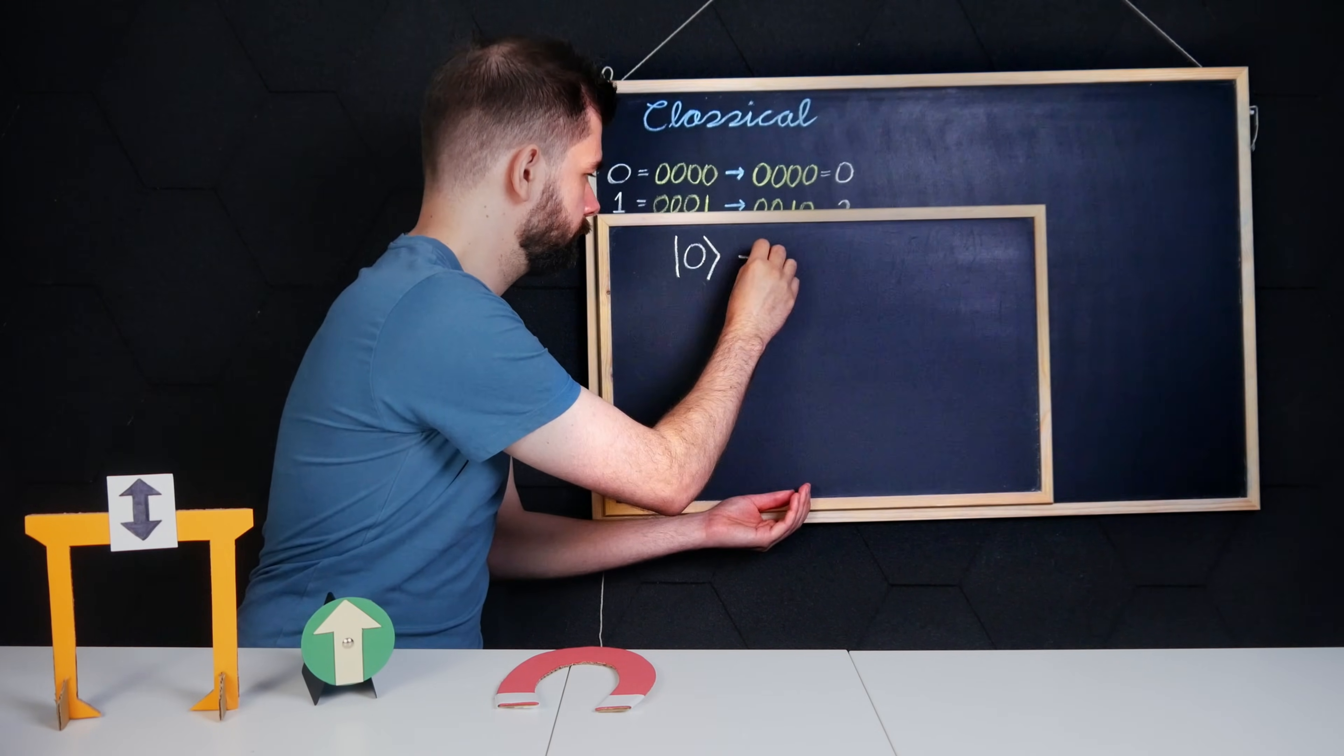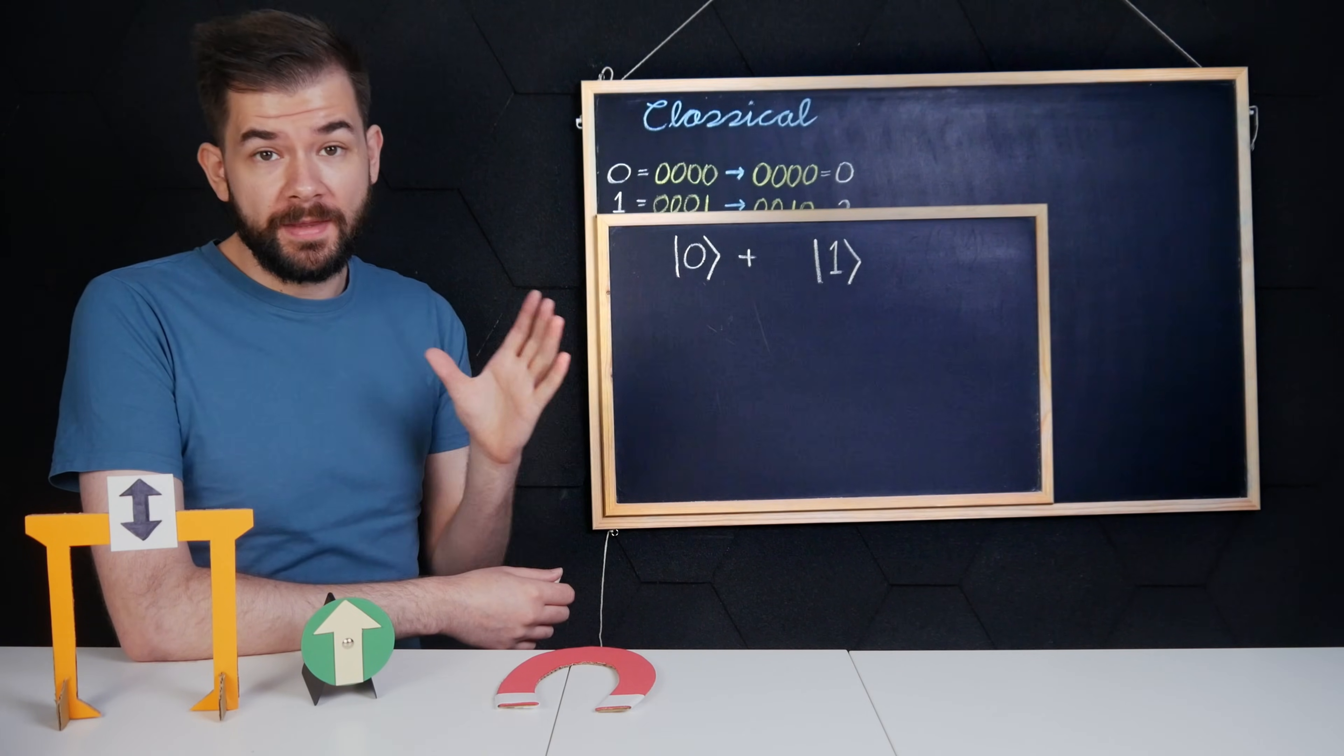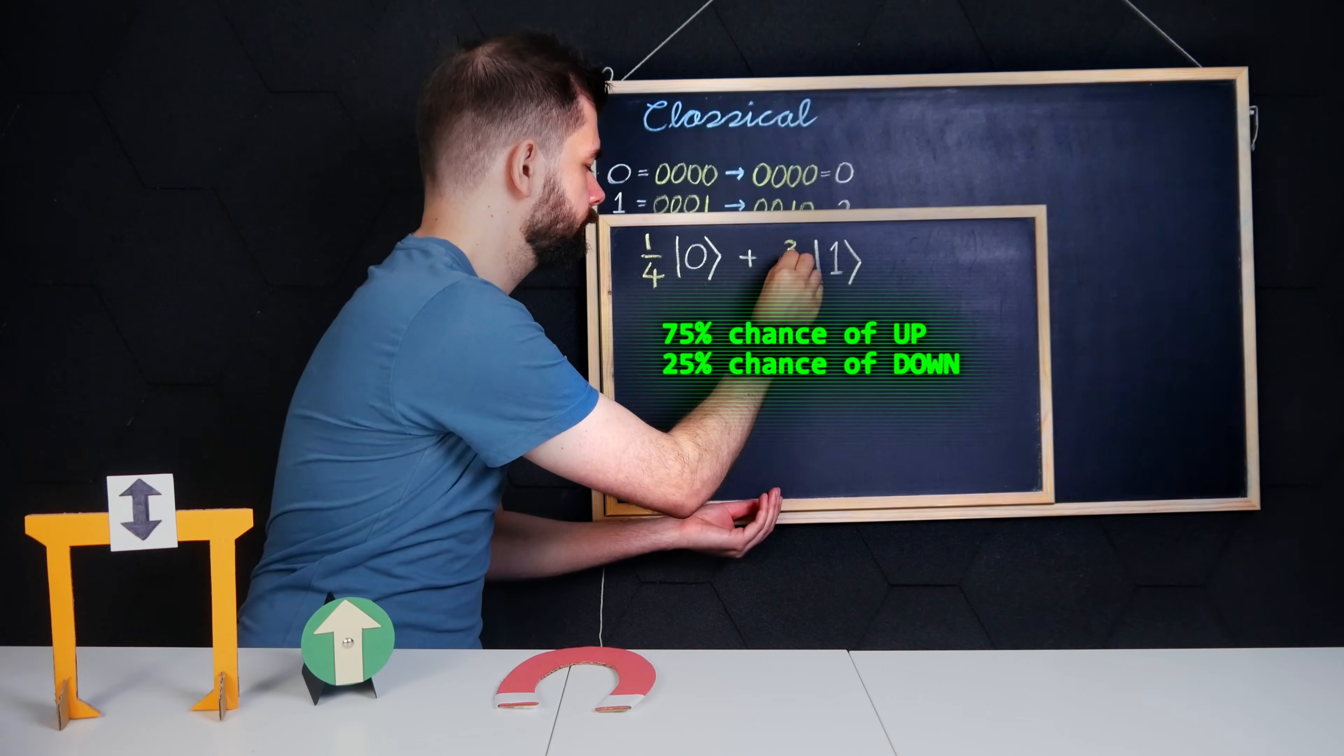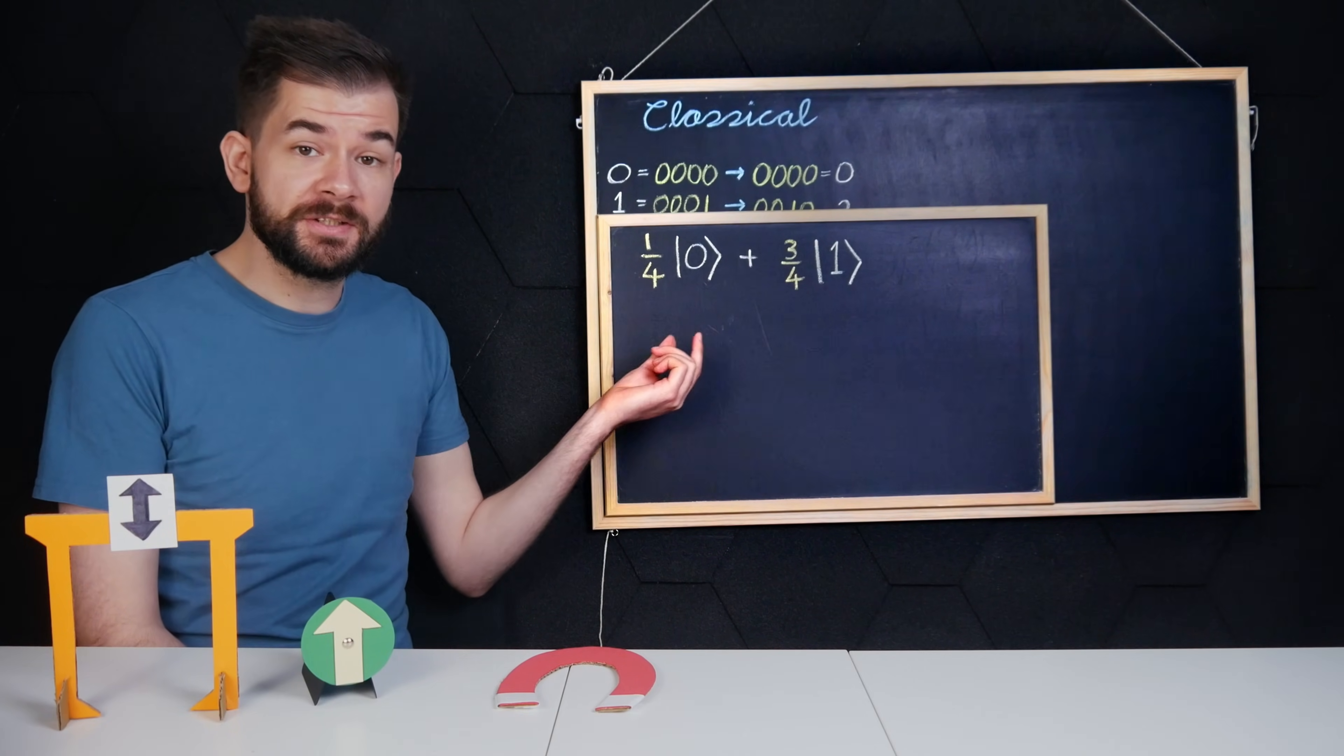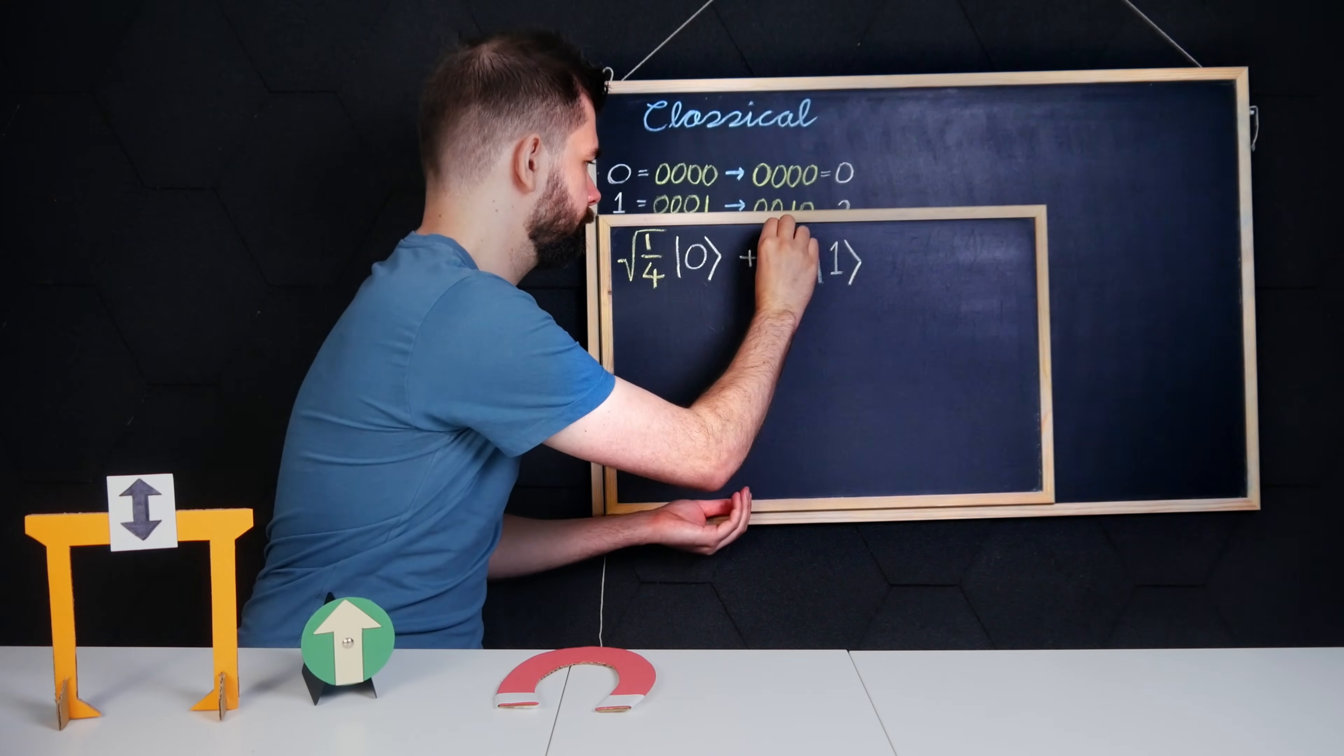The standard way to denote the outcomes for one qubit looks like this. Then we associate each outcome with a probability. So in our earlier example, we might have a three-quarters chance of observing one. Now we actually don't write the outcomes like this. We standardize them so that the coefficients of each outcome square to the probability of observing that outcome.